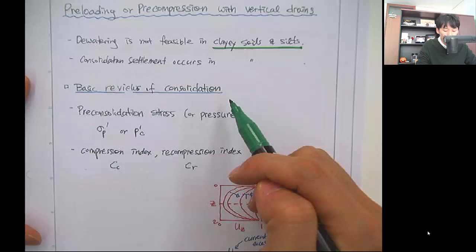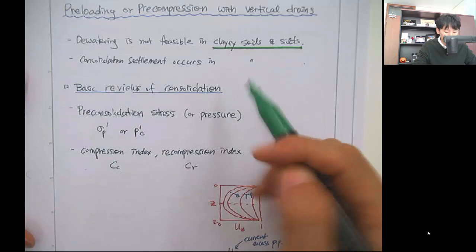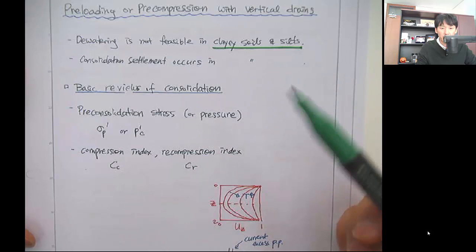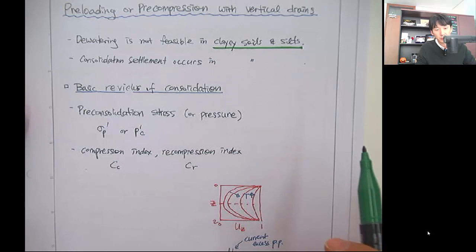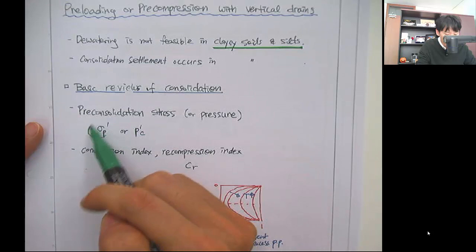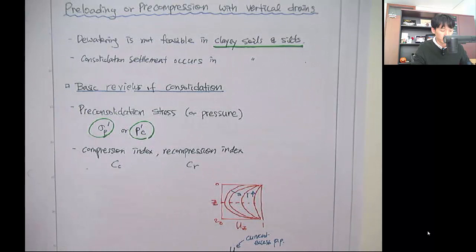I presume you've taken Soil Mechanics 1 in undergraduate. The basic theory of one-dimensional consolidation has been covered in the prerequisite courses, so we'll briefly review the core concepts here. Pre-consolidation stress is the maximum vertical effective stress that the soil has ever experienced. We use sigma_p prime or p_c prime to denote the pre-consolidation stress.